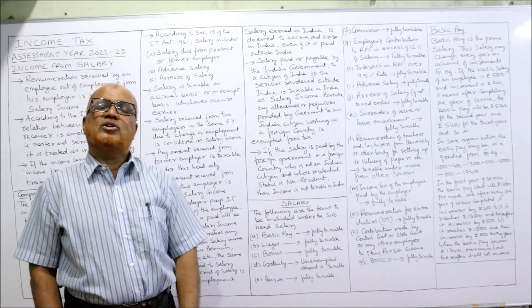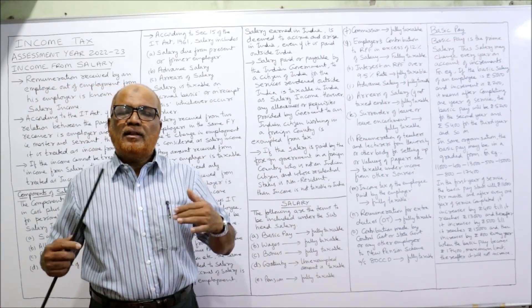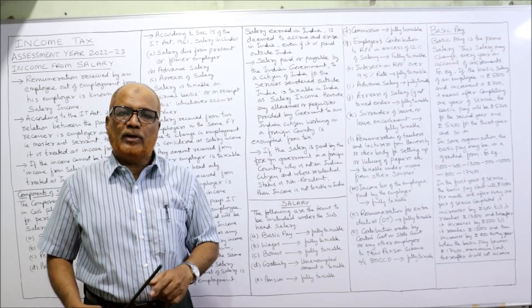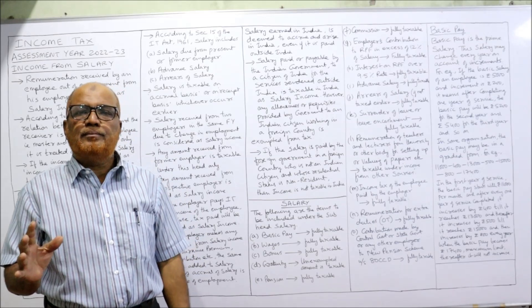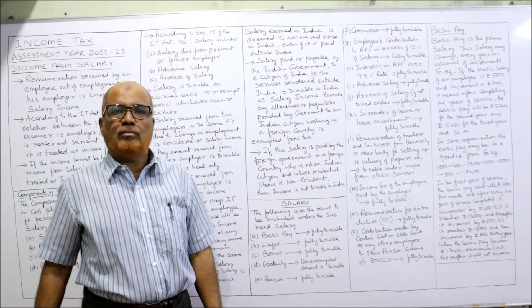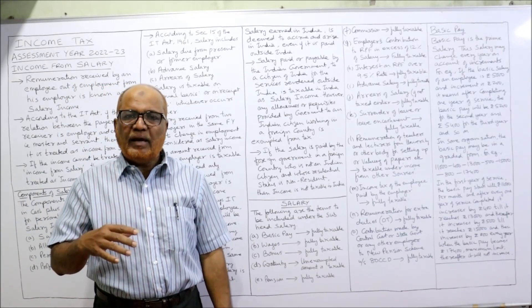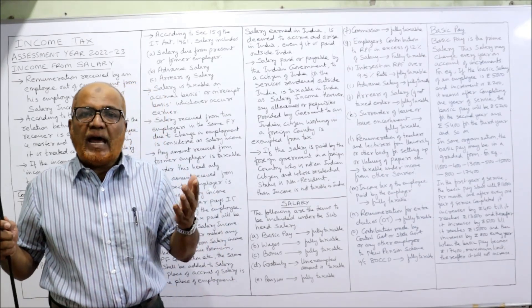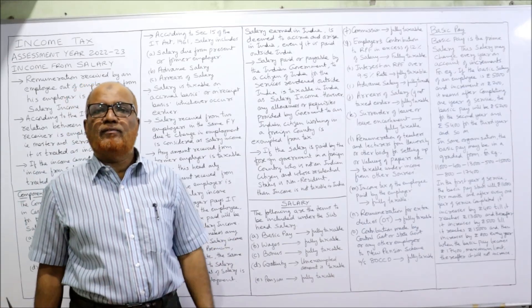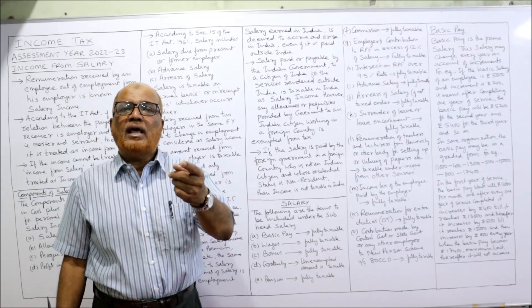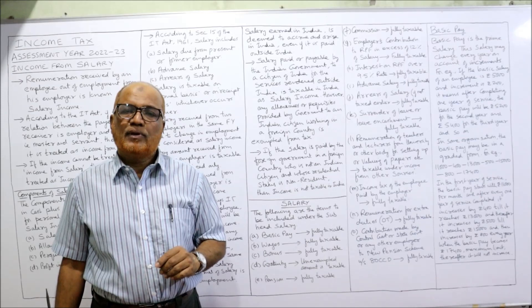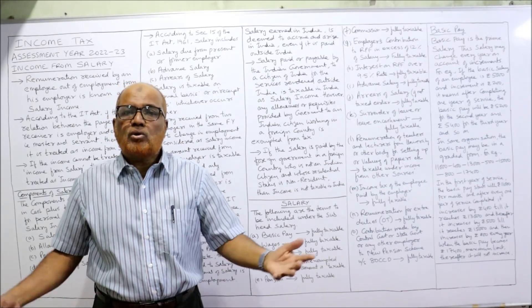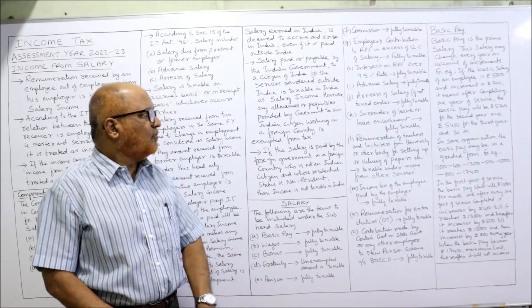Surrender of leave or leave encashment: sometimes the employer allows a certain number of leave days per year — suppose 15 days per year. If the employee has not availed the leave, the employer says you can encash your leave and get cash payment for the leave not taken. That is called leave encashment, and it is fully taxable.